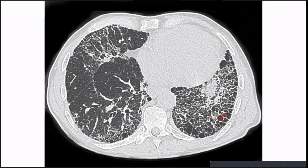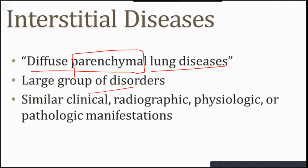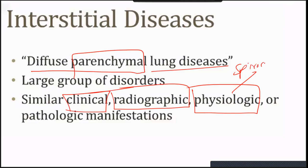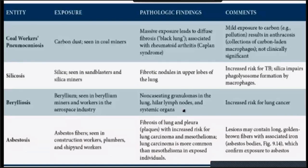You can see a very classical CT presentation with honeycombing — the classical presentation of interstitial lung disease. We also call it diffuse parenchymal lung disease — a large group of disorders with similar clinical, radiographical, physiological, and pathological manifestations that are well correlated. This chart is from the famous book Pathoma. It comes in your Taibah exams, SMLE, USMLE, and PLAB examinations. It covers coal worker's pneumoconiosis, silicosis, berylliosis, and asbestosis.